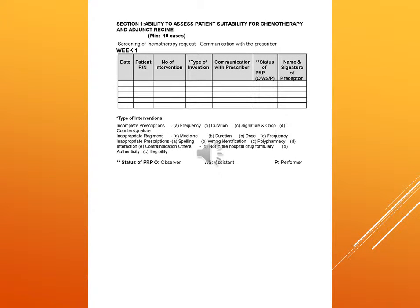Section 1 covers the ability to assess patient suitability for chemotherapy and the appropriate dosage form. This involves screening of chemotherapy requests and communication with the prescriber. The PRP must attend a minimum of 10 cases. Week 1 is followed by a chart which includes date, patient hour, number of interventions, type of intervention, communication with prescriber, status of PRP, and name and signature of the preceptor.